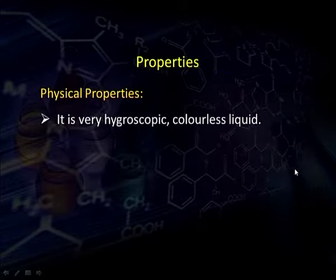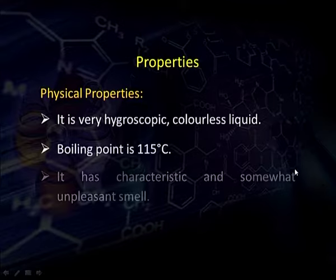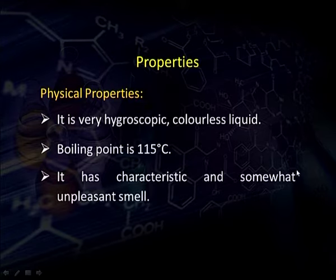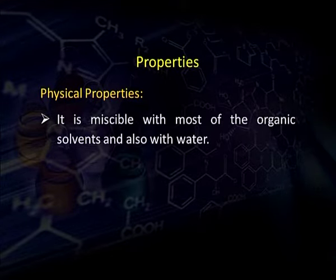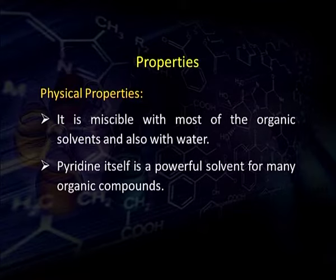Now, properties of pyridine. Pyridine is a colorless liquid. It is very hygroscopic in nature. Its boiling point is about 115°C. It has a characteristic smell which is slightly unpleasant. It is miscible with most organic solvents and with water. Pyridine itself is a powerful solvent and acts as a solvent for a number of organic compounds.